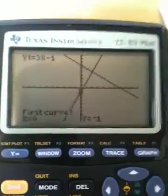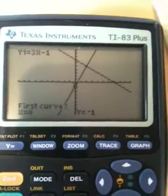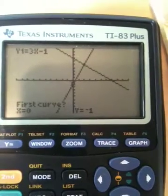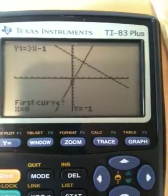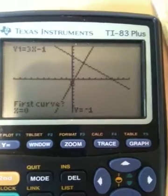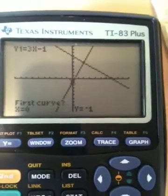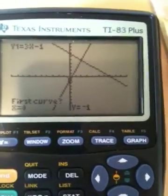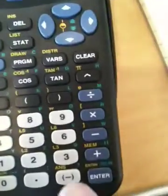And then the calculator asks you a couple of different questions. The first question is, they want to know if the first curve or the first line is y equals 3x minus 1, as you can see in the top left of the screen. It says y1 equals 3x minus 1, that's the first curve. We'll say yes, so we'll just hit enter.